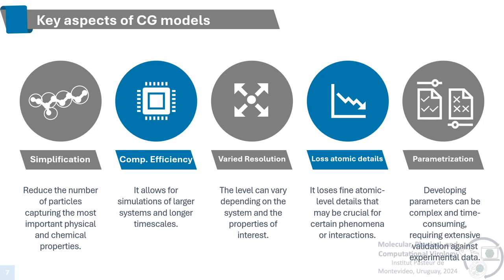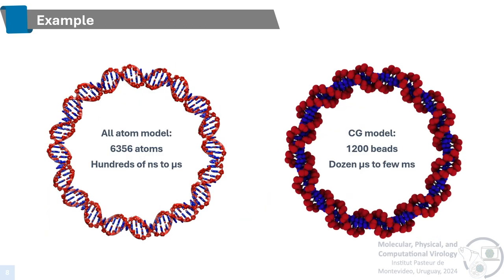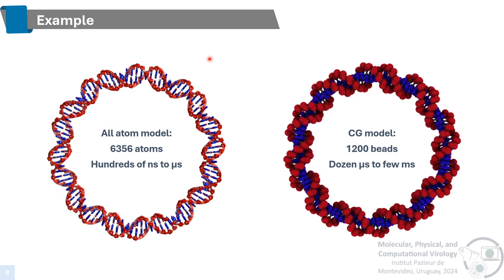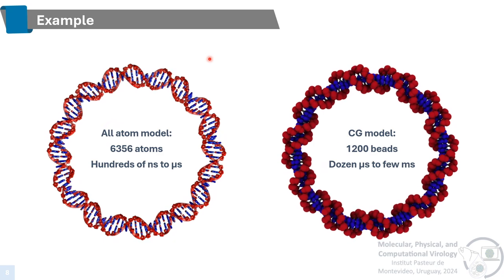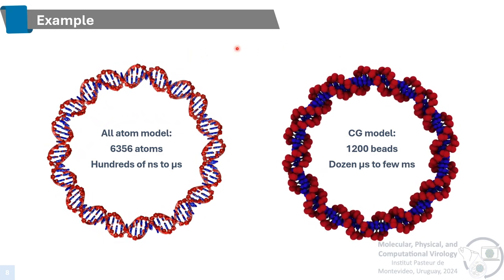A downside to the simplified representation of coarse-grained models is the loss of atomic-level details and interactions. So if we want to simulate an event that needs atomic-level details, we cannot use coarse-grained models. Another downside is that developing parameters for coarse-grained models can be difficult and time-consuming, requiring extensive validation against experimental data. Here we have the same DNA system represented with an all-atom model and a coarse-grained model, and we can see that the number of particles is greatly reduced.